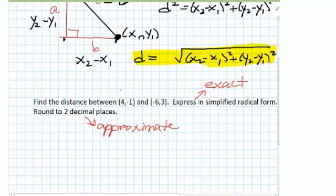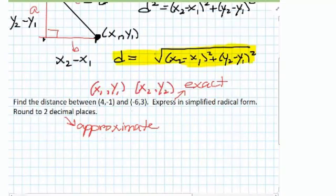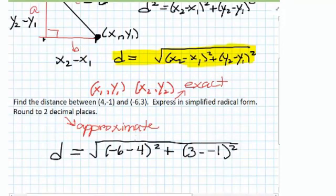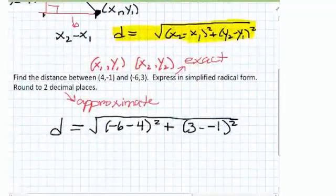Let's say this is x1 y1 and this guy is x2 y2. So plugging into the formula, we have the distance is equal to the square root, and then we have x2 minus x1, so that's going to be negative 6 minus 4 squared plus y2 minus y1, so 3 minus negative 1. I purposely picked two points that have negative coordinates because I want you to make sure you don't make sign errors.